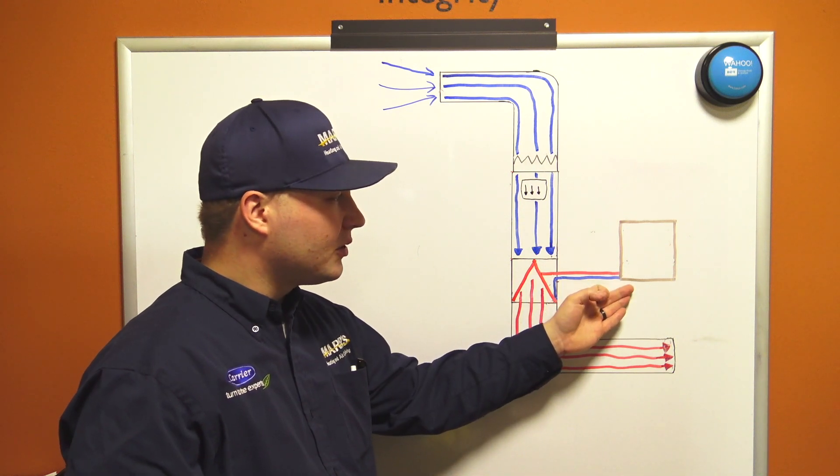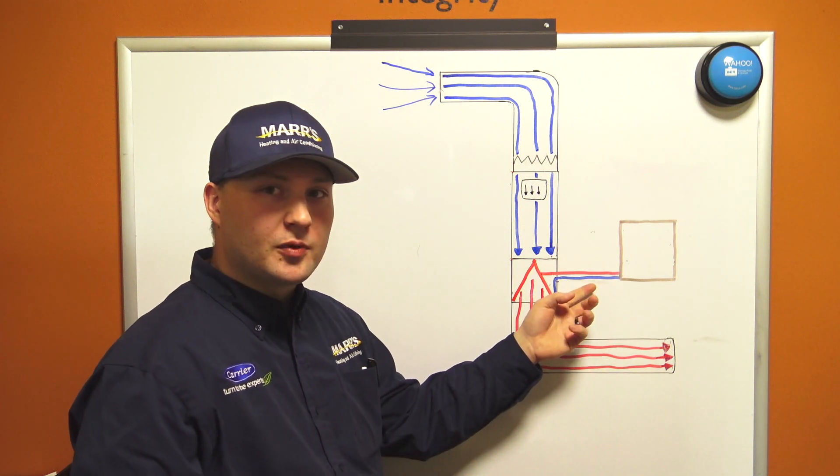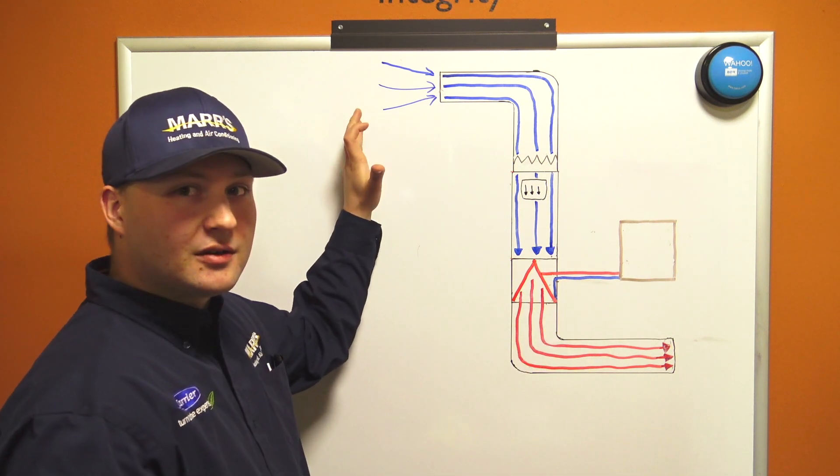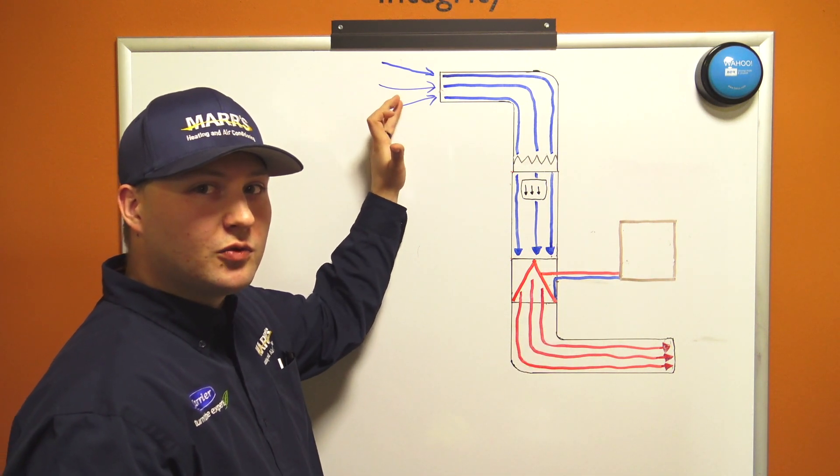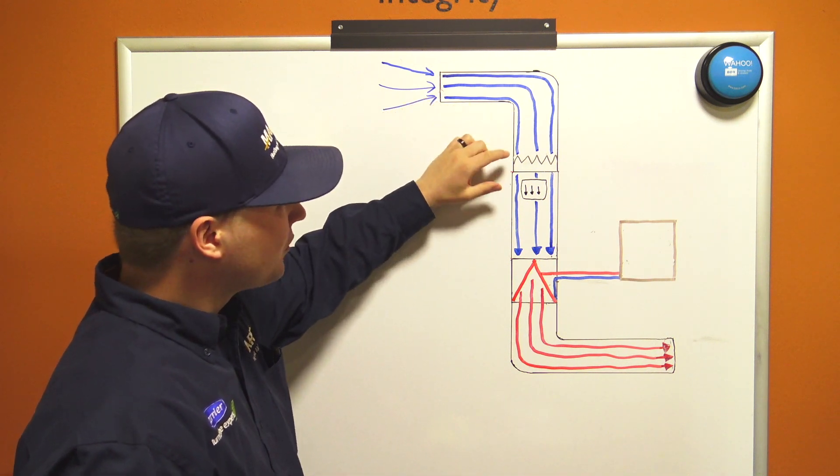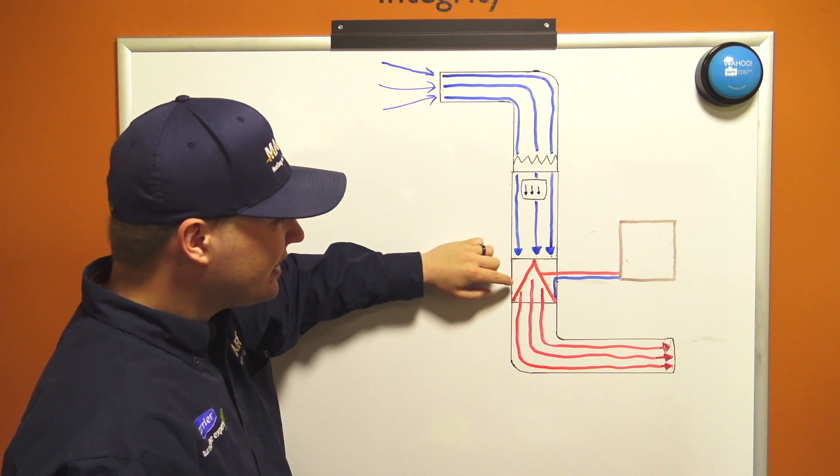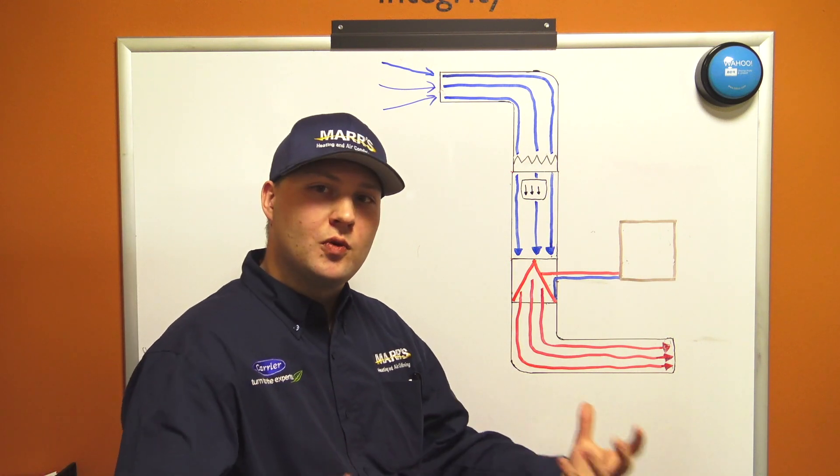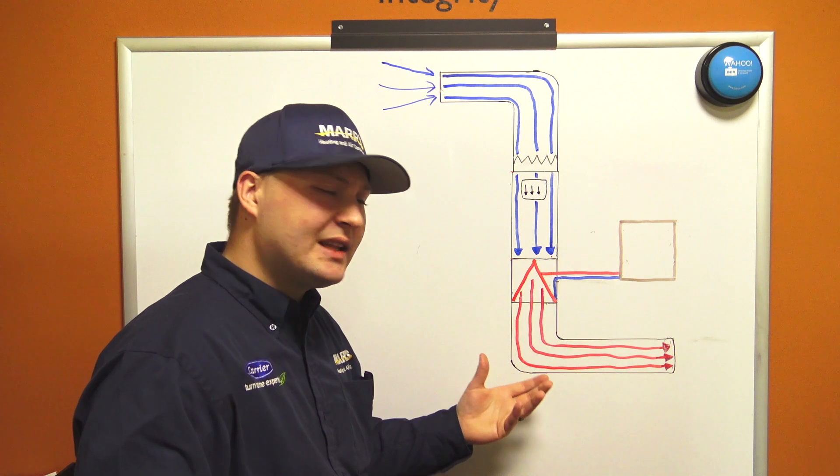What's happening is we're taking the cold air that's inside the house, drawing it through this return air duct, filtering that air and running it over a hot indoor coil and then distributing that heat throughout the house. But how did we get that heat when it's so cold outside?